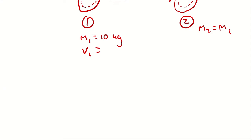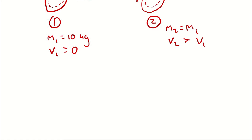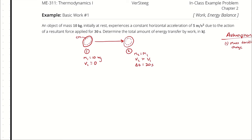That problem involves a change in velocity as well as a displacement. The velocity at the end of the process is going to be greater than it was at the initial state. The duration is 30 seconds, and we want to know the work required to accomplish this process in kilojoules.